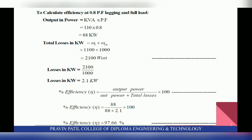Next, calculate efficiency at 0.8 power factor lagging and full load. Output power = kVA × power factor = 110 × 0.8 = 88 kW. Total losses = Wi + Wcu = 1100 + 1000 = 2100 Watt = 2.1 kW. Efficiency = output power / (output power + total losses) × 100 = 88 / (88 + 2.1) × 100 = 97.66%.